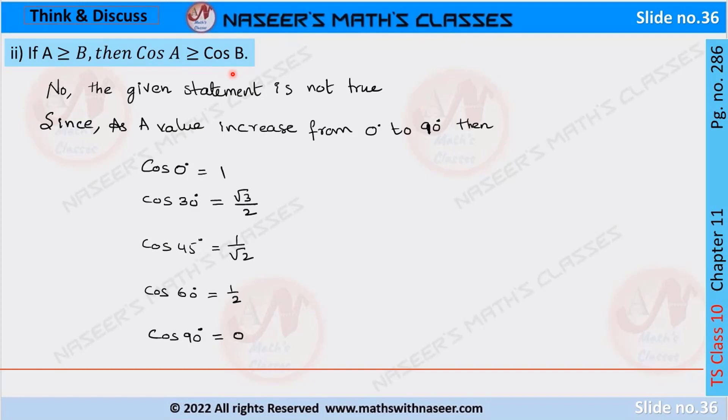If A greater than or equal to B, then cos A greater than or equal to cos B. No, the given statement is not true. Since as A value increases from 0 to 90 degrees, then cos 0 is equal to 1.